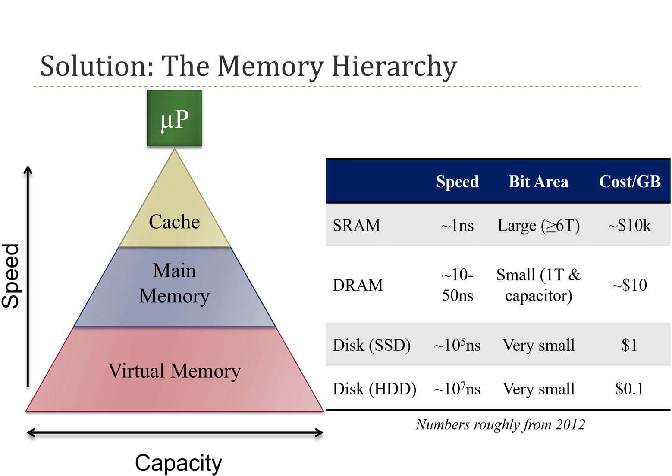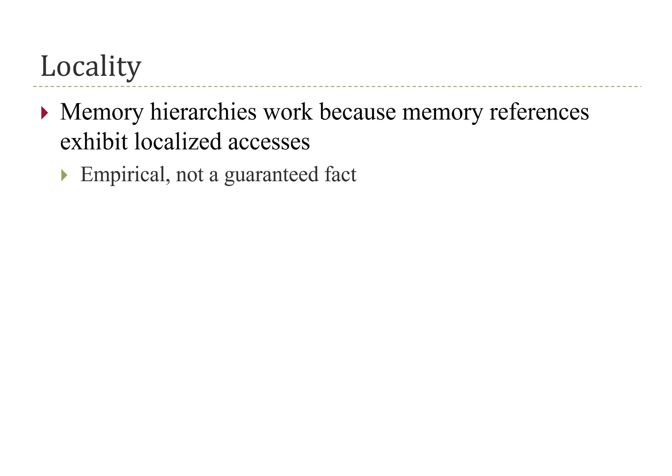To the microprocessor, it will appear that our memory is fast but also has the capacity of the larger lower levels. The only way this memory hierarchy works is if we are actually able to find most of our information in the small and fast SRAM. Most of the time this works because programs and memory references tend to exhibit localized access. This is empirical — true in most programs, but not guaranteed, which is why there can be variability in how well different programs make use of a memory hierarchy.